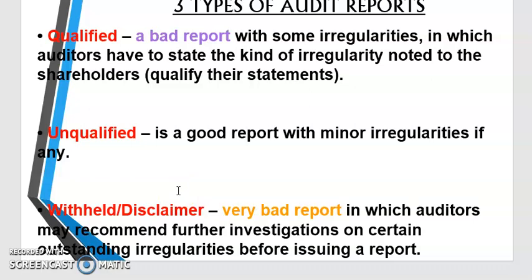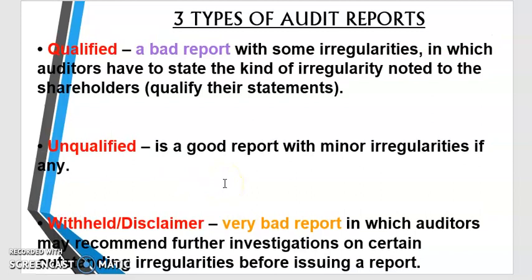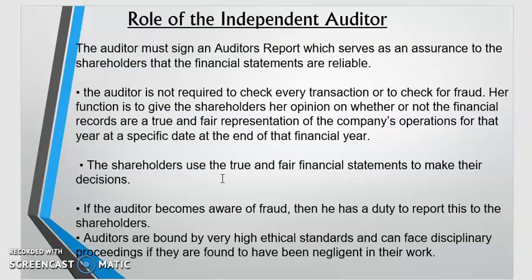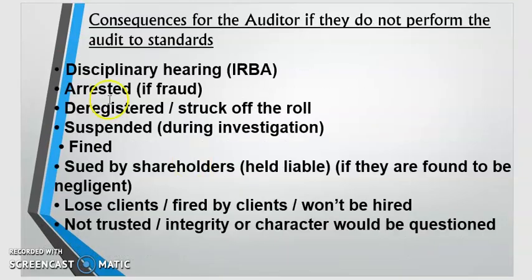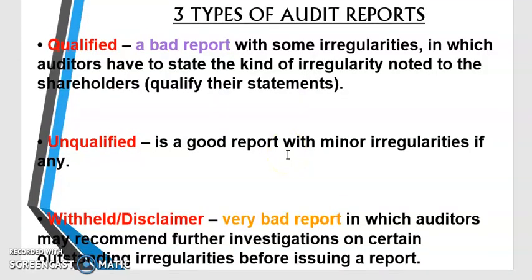A withheld or disclaimer report is a very bad report. Here, the auditor cannot express an opinion at all because everything is in disarray. For example, the company claims R500,000 worth of equipment but when the auditor checks there's only R100,000. It's too risky for the auditor to give a good opinion under those circumstances.